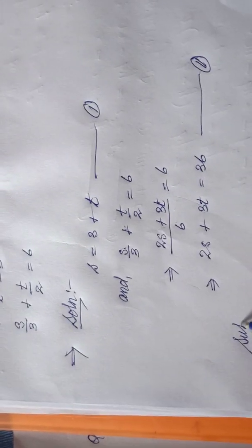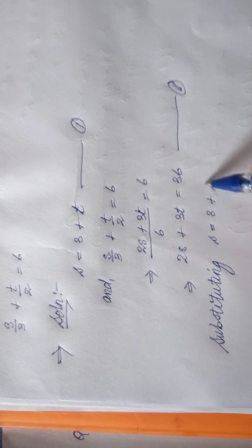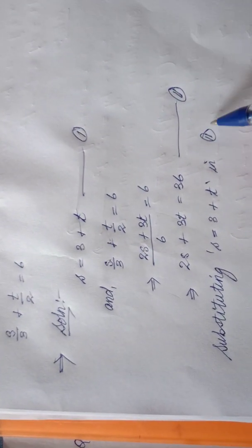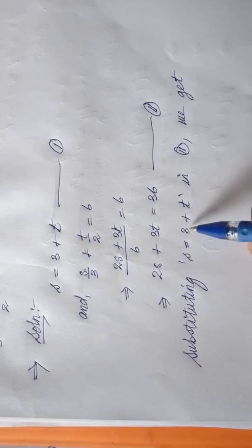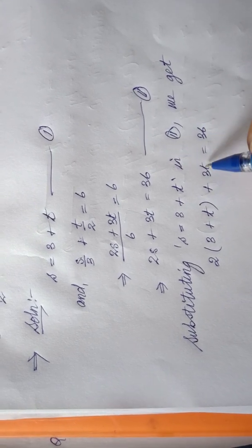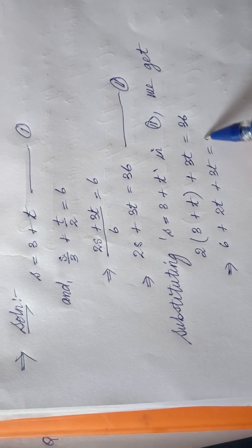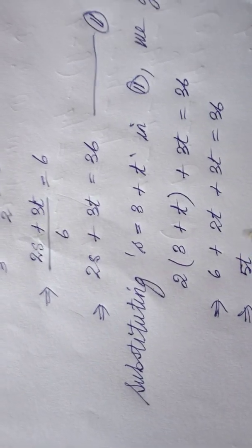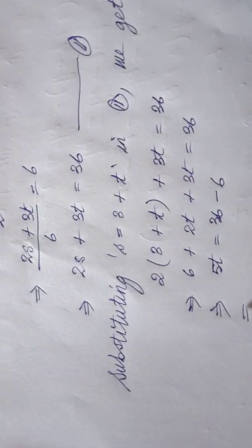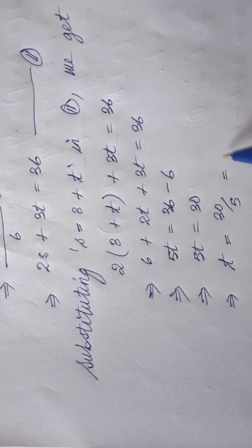Substituting s equal to three plus d in equation two: two times (three plus d) plus three d equal to 36. Multiplying the bracket with two: six plus 2d plus 3d equal to 36. Moving six to the right-hand side: 2d plus 3d is 5d equal to thirty. So 5d equal to 30, then d equal to six — the value of d is six.